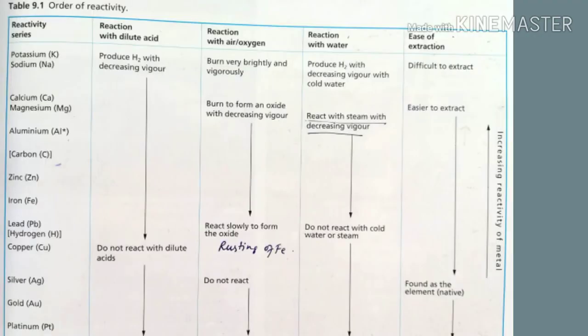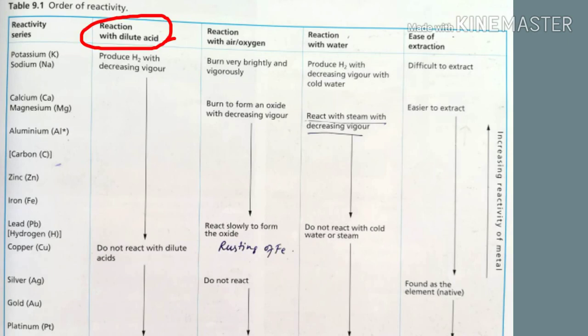Now when you look at the order of reactivity, the upper elements in the reactivity series are highly reactive — they'll react with dilute acid to produce hydrogen gas. But the lower ones in the reactivity series do not react with dilute acid.